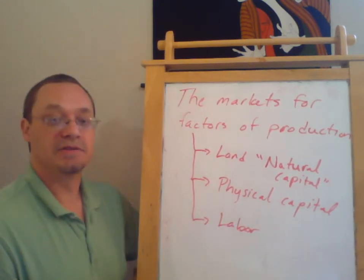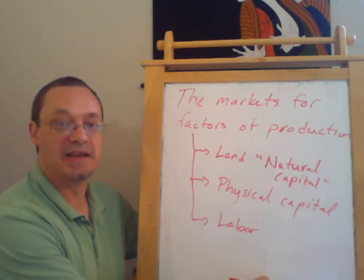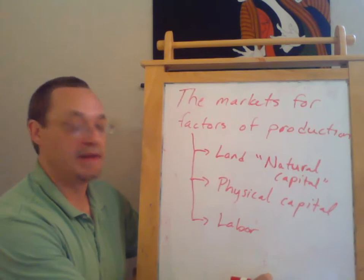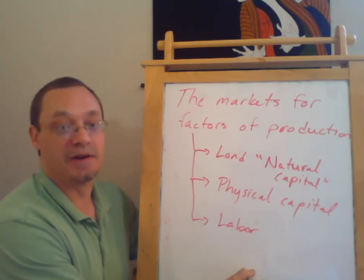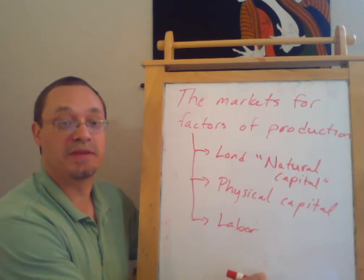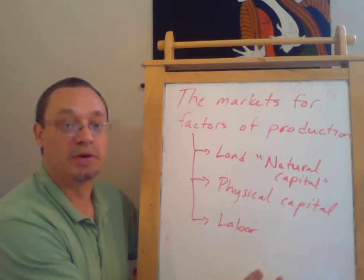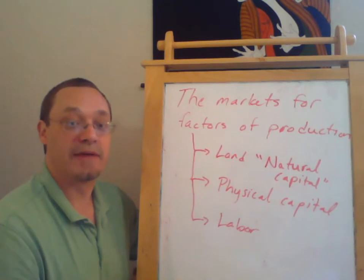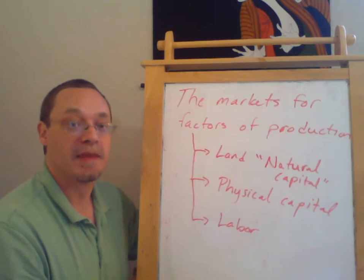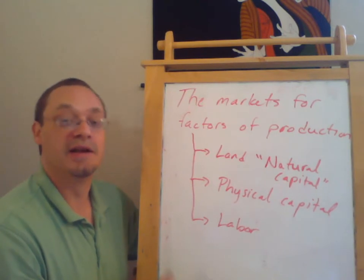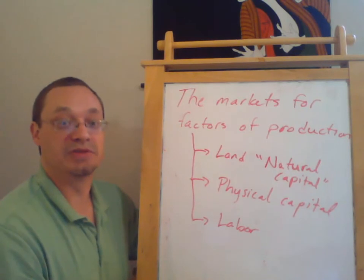When people were originally writing economics back in the late 1700s and early 1800s, when they talked about labor, they were mostly talking about unskilled labor. At that stage of the Industrial Revolution, countries like England were basically pulling people out of agriculture — they may have had skills in agriculture, but often they were illiterate and didn't have skills relevant to the new industrial economy.